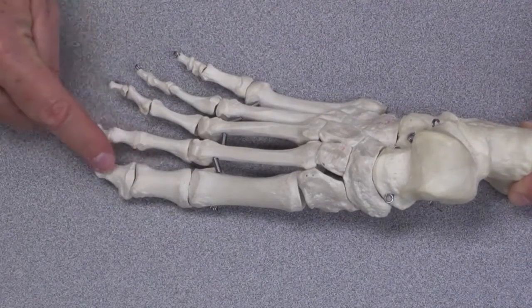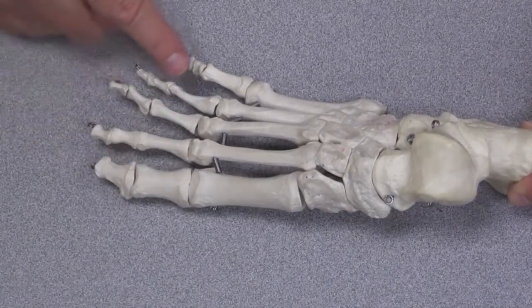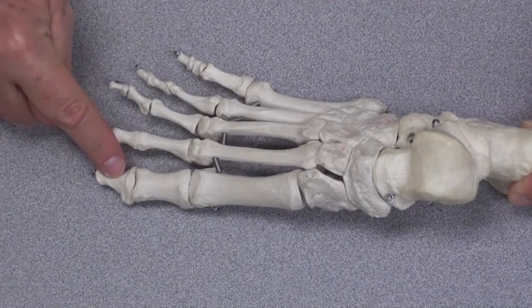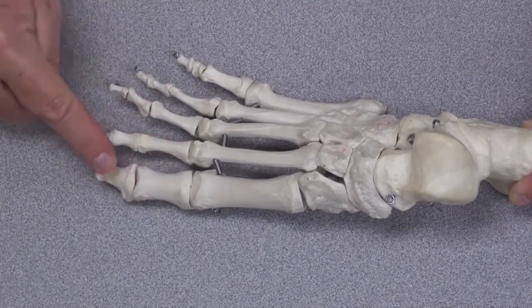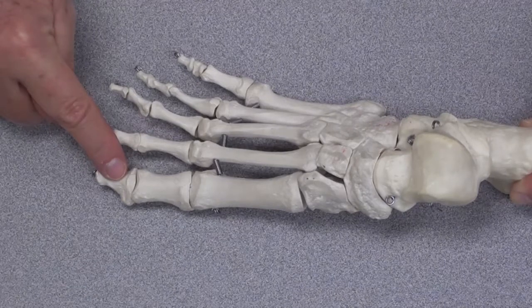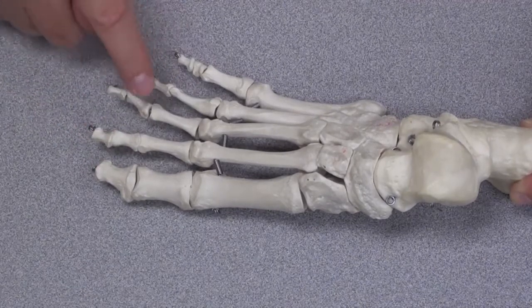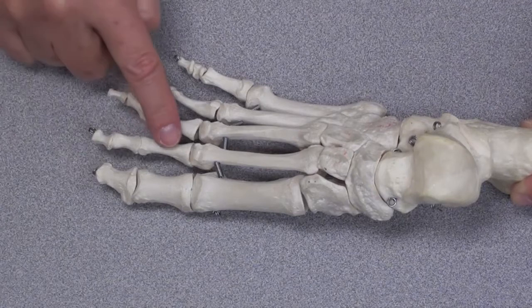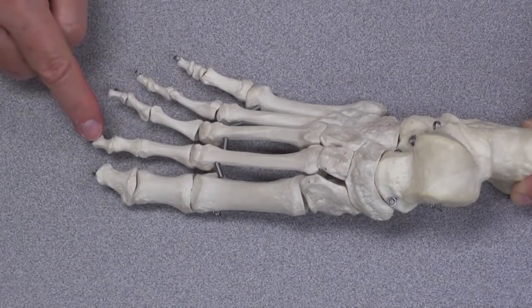Distal to them are the five toes. This is the great toe. This is the little toe. The great toe is made up of two bones, a proximal and distal phalanx. The other toes contain three bones, although they're very small. Proximal, middle, and distal phalanx.